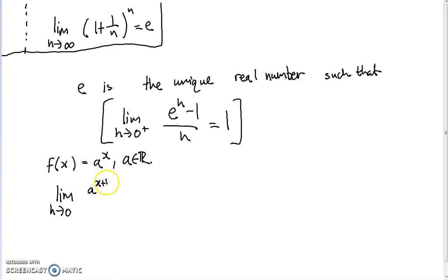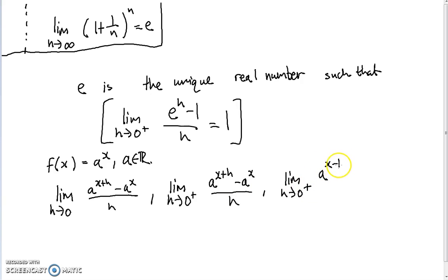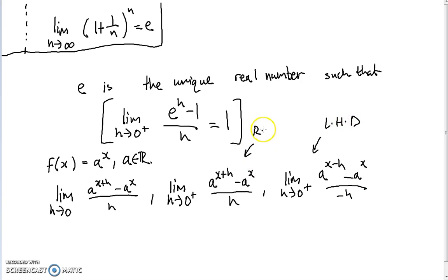We need A to the power of (x plus H) minus A to the power of x, all over H. And we need to show that this limit exists, which is the same thing as showing that the limit as H approaches 0 from the right-hand side exists, and also that the limit as H approaches 0 from the right-hand side of (A to the x minus H minus A to the x) over negative H exists. This is just the left-hand derivative, and the other is just the right-hand derivative.